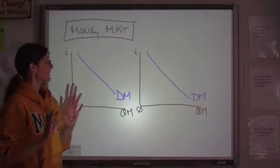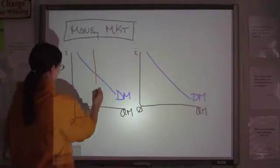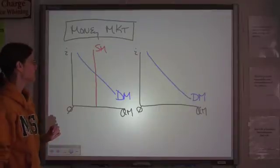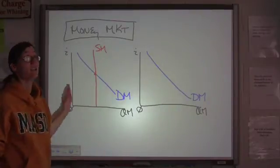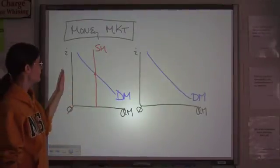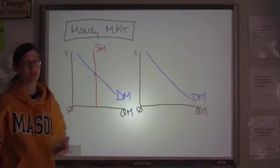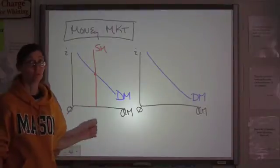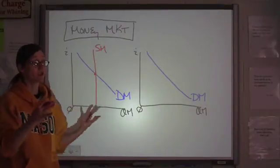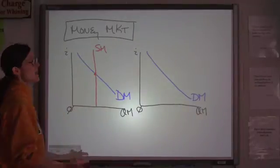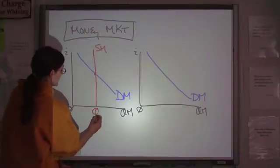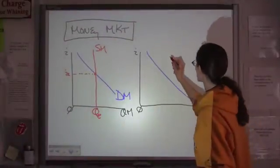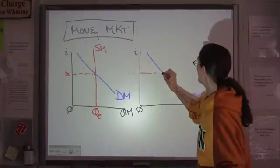The supply of money is vertical. The reason the supply of money is vertical is because it does not vary based on the interest rate. Demand for money is tied to the interest rate, but supply of money is not. The supply of money is fixed — it is set by the Fed. It doesn't move unless the Fed does something to move it. As with every other graph, you need to mark your equilibrium quantity and your equilibrium interest rate.